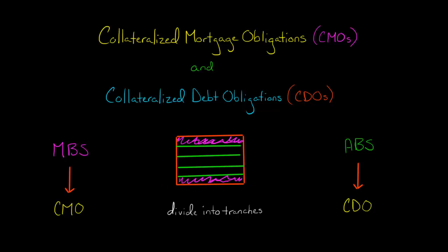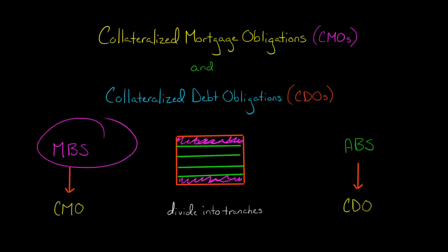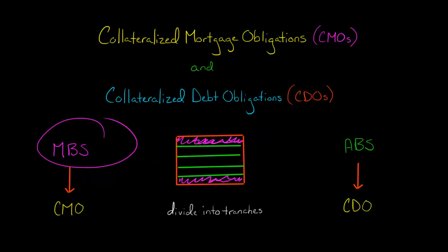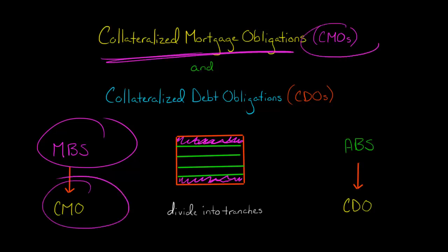Here's the nice thing about this: investors can choose which of the tranches they want to be invested in based on their specific risk appetite. So when we take a mortgage-backed security like this and slice it up into tranches, and then investors choose which tranche they want to be invested in, that is called a collateralized mortgage obligation — CMO. A collateralized mortgage obligation is just a mortgage-backed security that was divided into tranches based on different risk profiles.